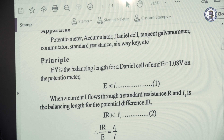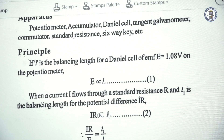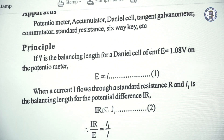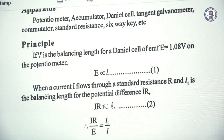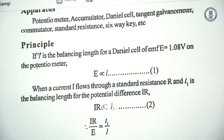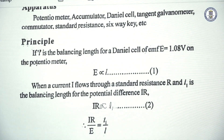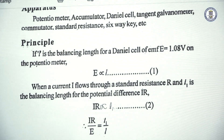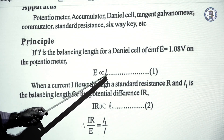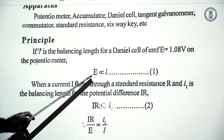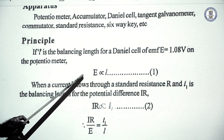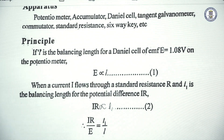As we know, in the case of a potentiometer, if L is the balancing length for the Daniel cell, which has an EMF value of 1.08 and is connected in the secondary circuit, then E is proportional to L, or 1.08 is proportional to L.